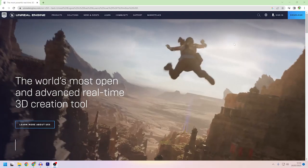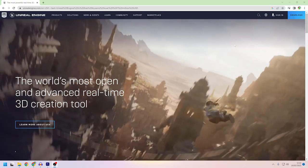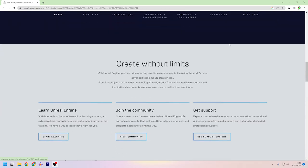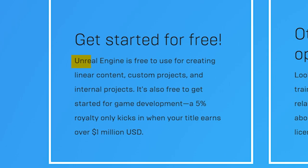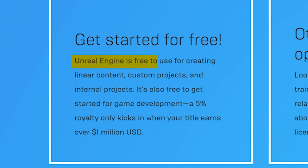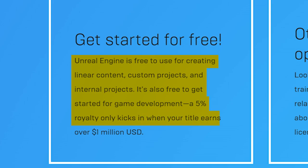First things first, to get a full and accurate answer, we need to go straight to the source: Epic Games. On their website, it says that Unreal Engine is free to use for creating linear content like films and for custom and internal projects. It's also free in many cases for game development — a 5% royalty only kicks in if and when your title earns over 1 million US dollars.